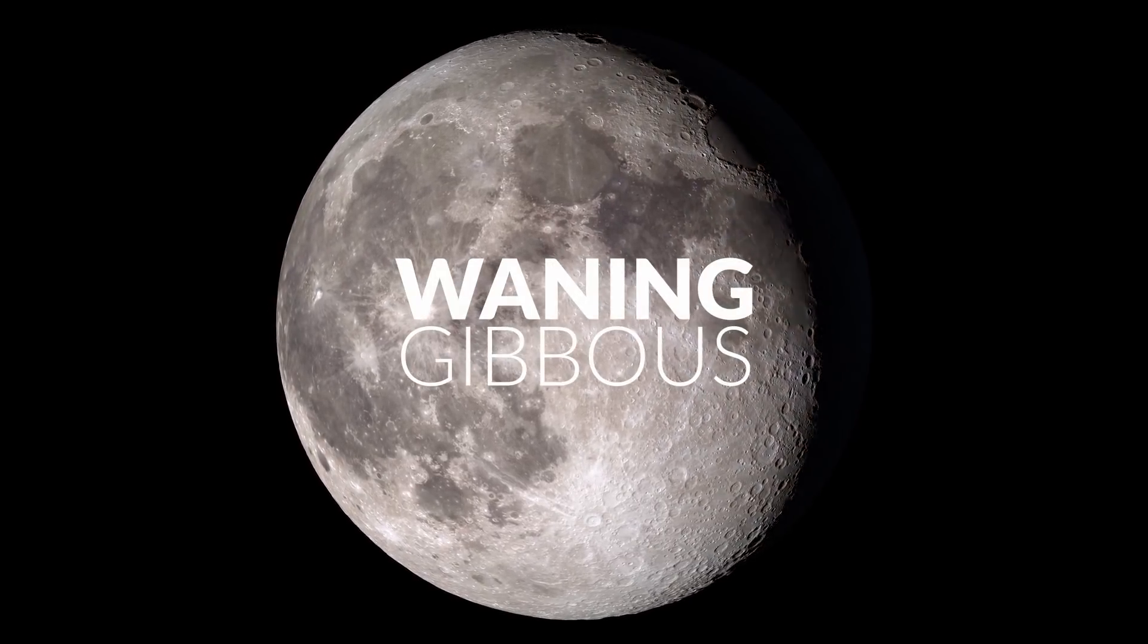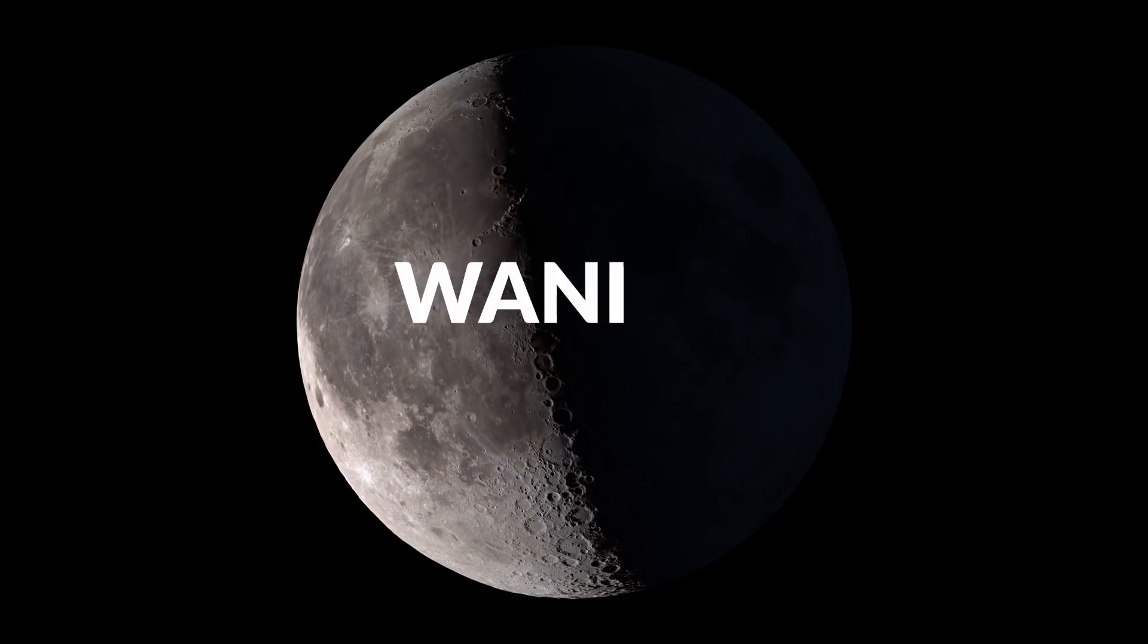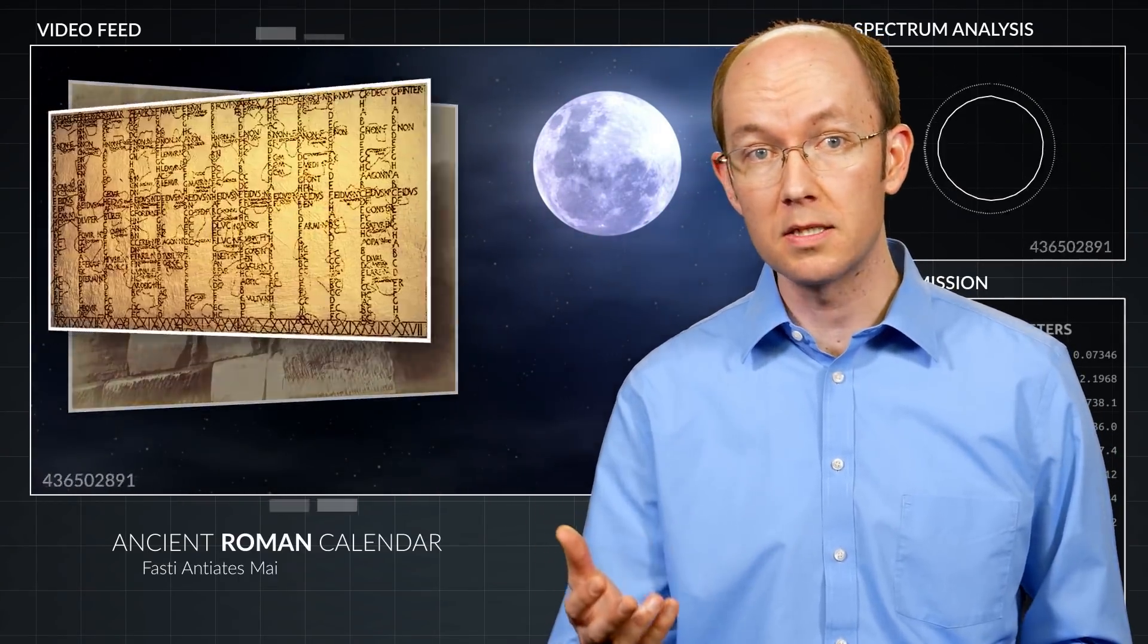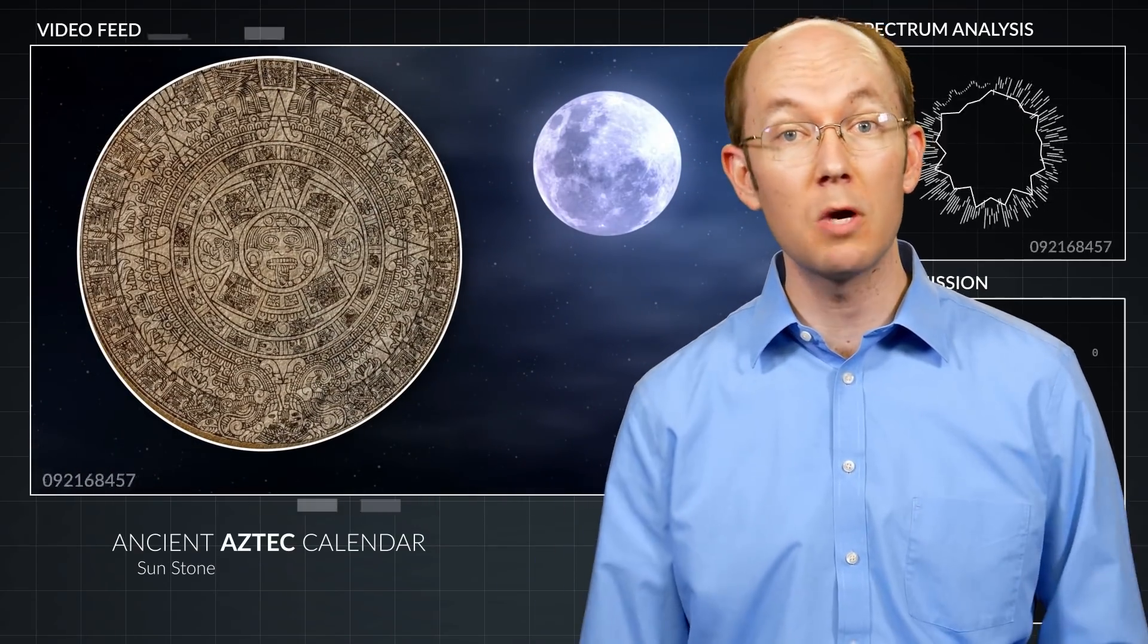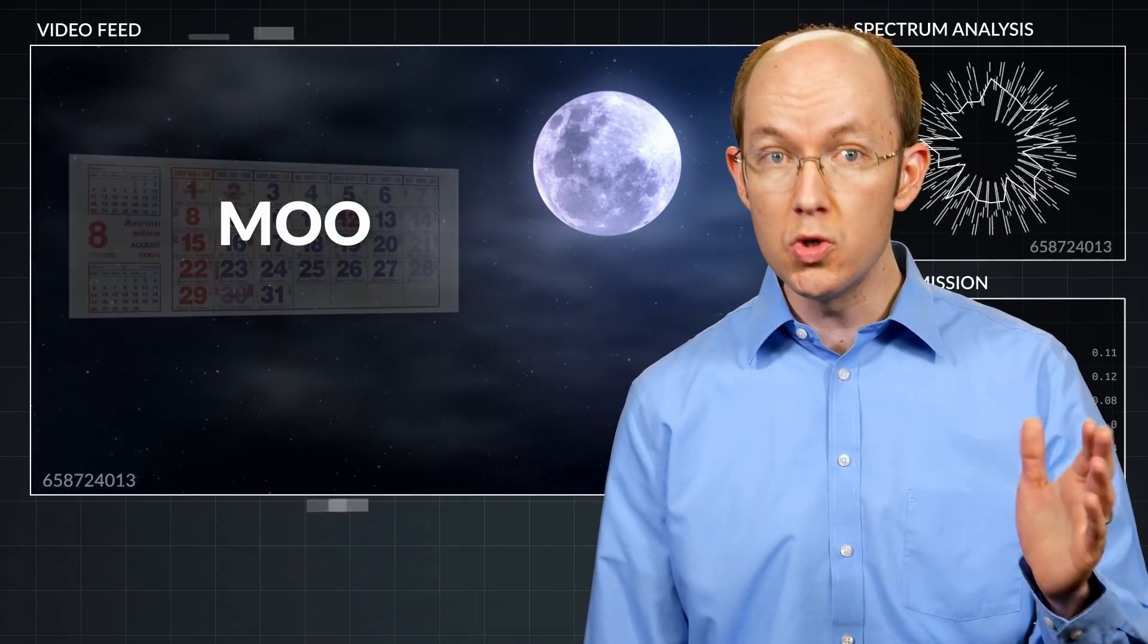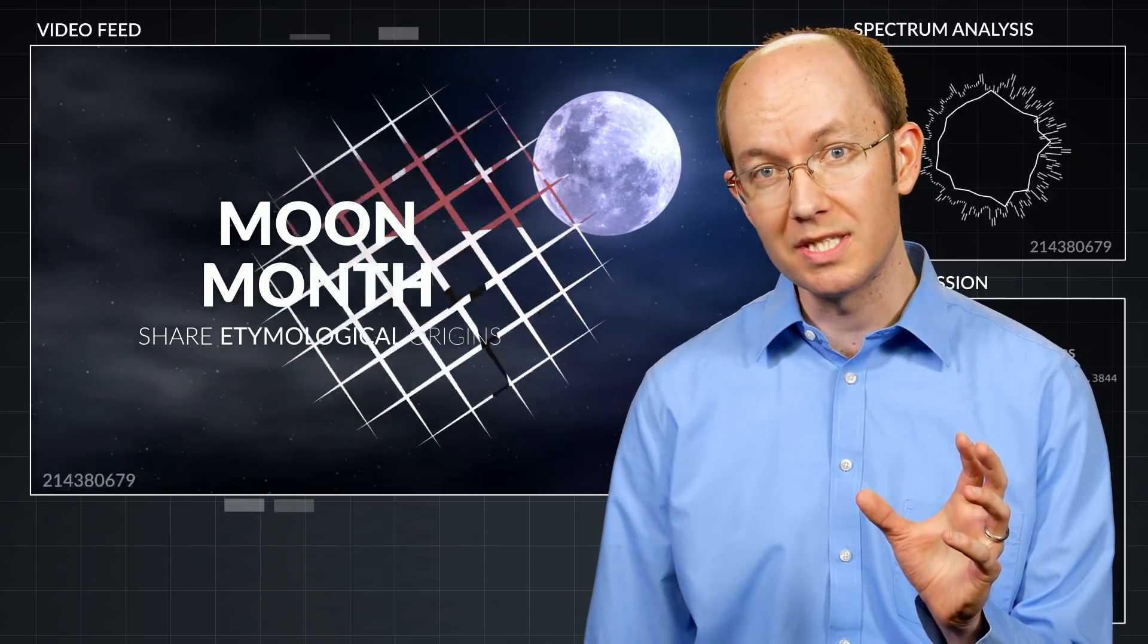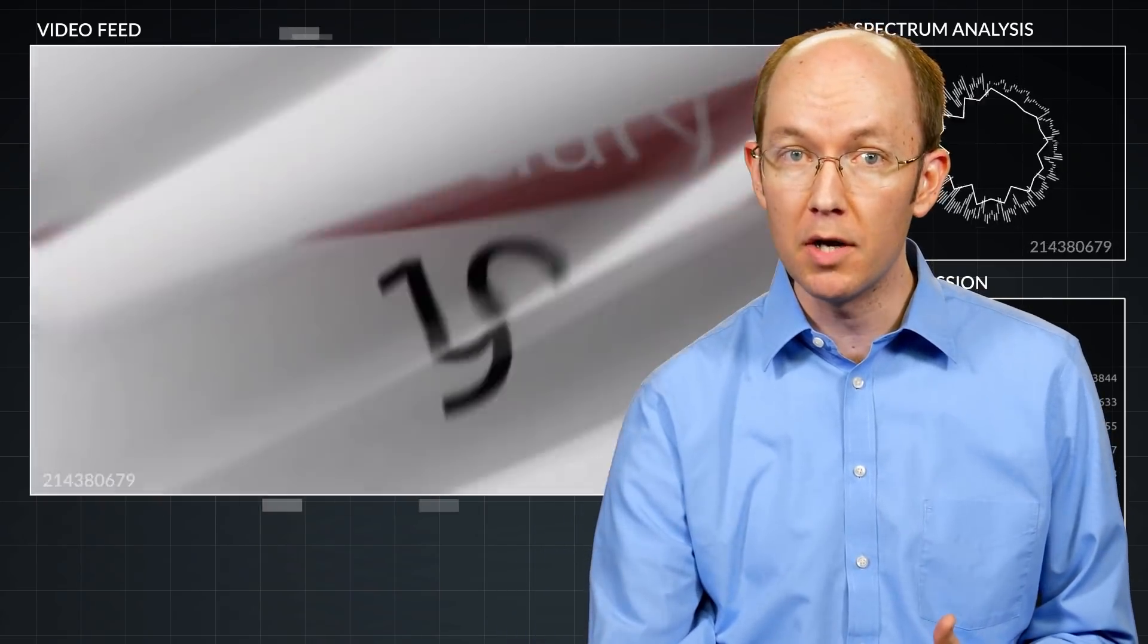Then it begins to diminish into the waning gibbous, the third quarter moon, the waning crescent, and back to a darkened new moon. For many cultures, past and present, the lunar cycle formed an obvious timekeeping foundation by which their calendars could be based. In fact, the words moon and month share etymological origins as the 29 and a half day cycle helped define the changing of months.